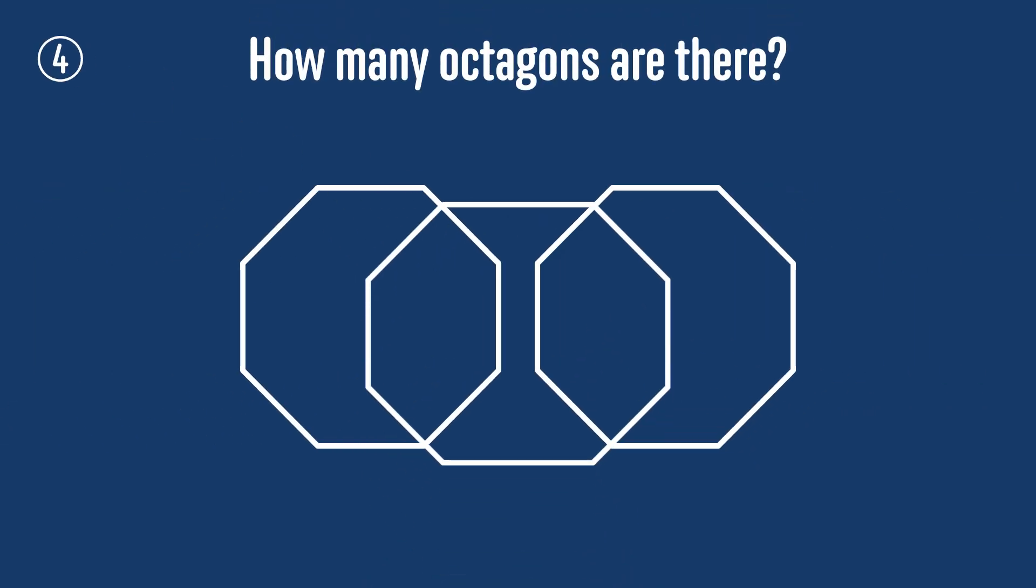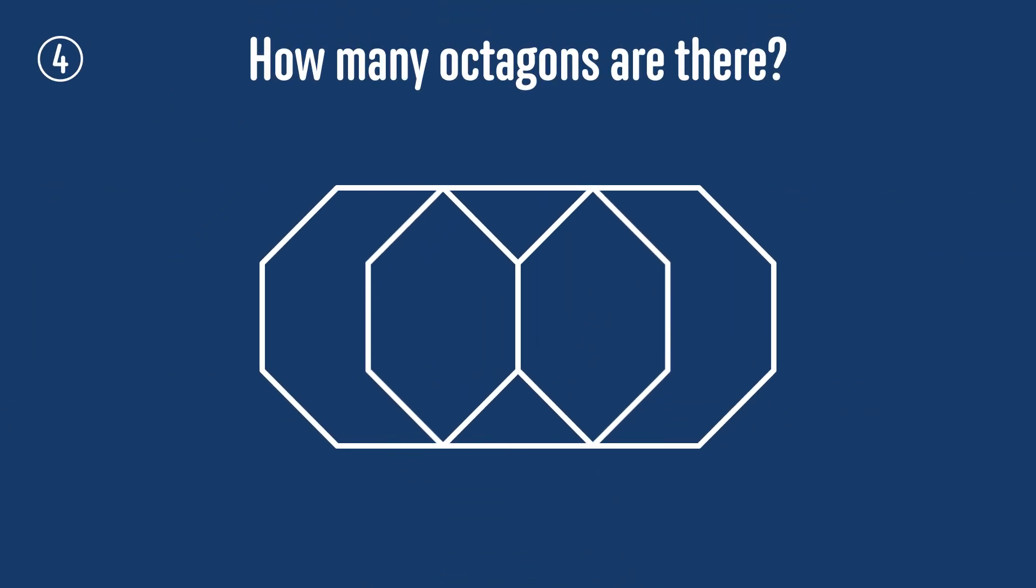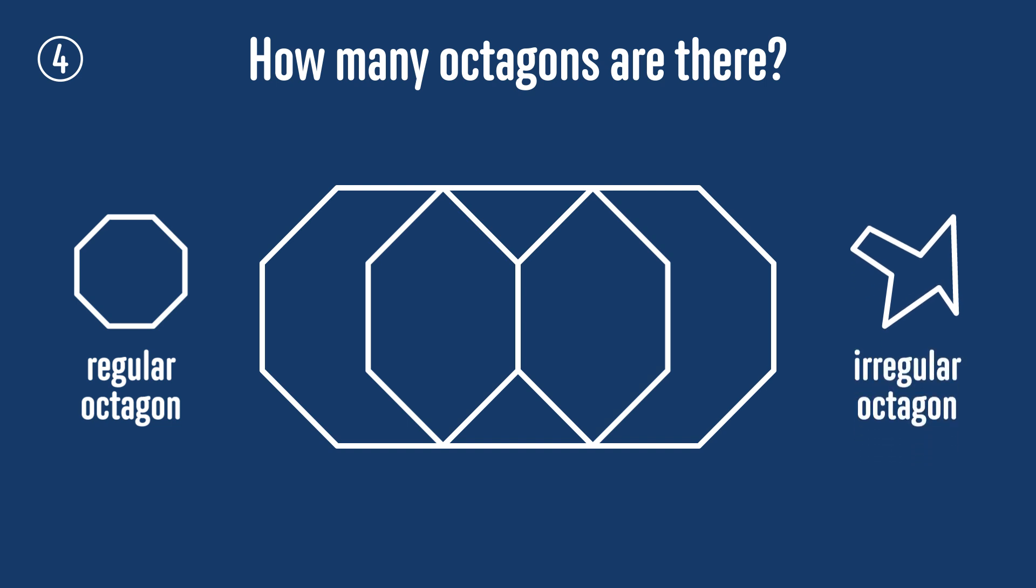How many octagons are there in this diagram? Remember, an octagon is an eight-sided shape. If all of the angles and side lengths in the octagon are the same, then it's a regular octagon. But we don't just want regular octagons here. The challenge is to count all eight-sided polygons that can be made from the lines in this diagram.